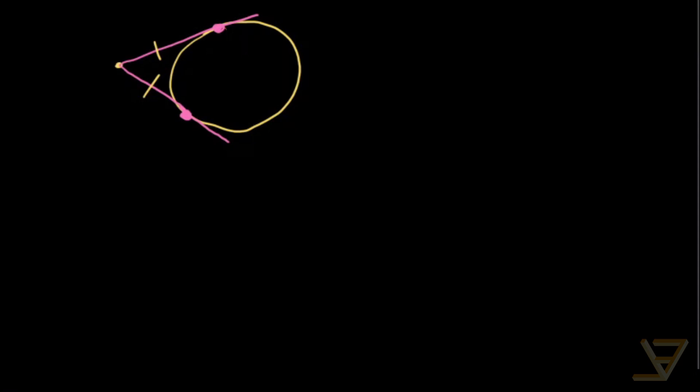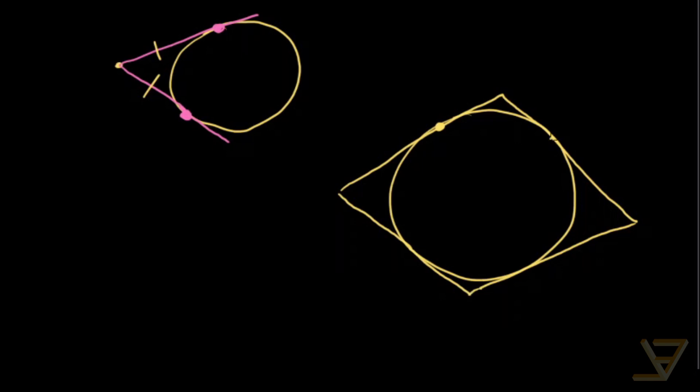For Pitot's theorem, let's say we've got a circle. And we then draw a quadrilateral that is tangent—each of its sides is tangent to some part of the circle. So we've got some quadrilateral like this. Let's call it A, B, C, and D, these vertices.